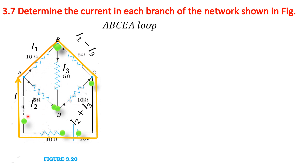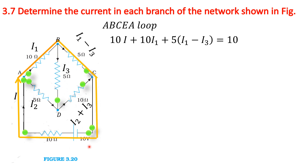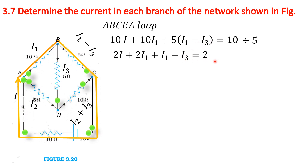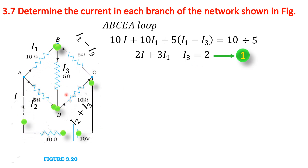The equation becomes 10I plus 10I1 plus 5(I1 minus I3) equals 10 (the EMF value). Dividing by 5, we get 2I plus 2I1 plus I1 minus I3 equals 2. Since 2I1 plus I1 equals 3I1, the equation becomes 2I plus 3I1 minus I3 equals 2. This is Equation 1.